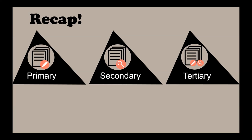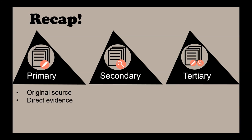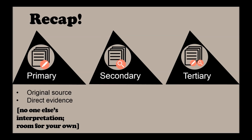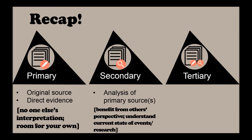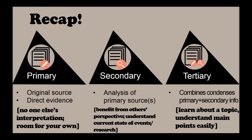Let's review. Primary sources are the original sources of information and present direct evidence that you can interpret on your own. Secondary sources analyze primary sources, so you can benefit from others' perspectives and understand the current state of research. Tertiary sources condense primary and secondary source information so you can learn about a topic and understand its main points easily.